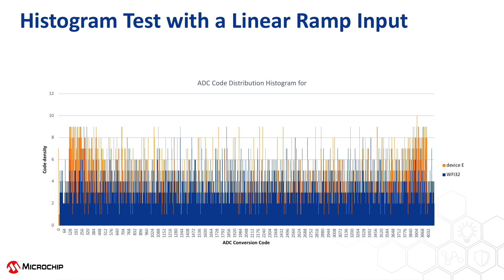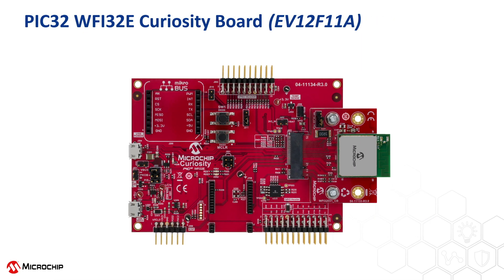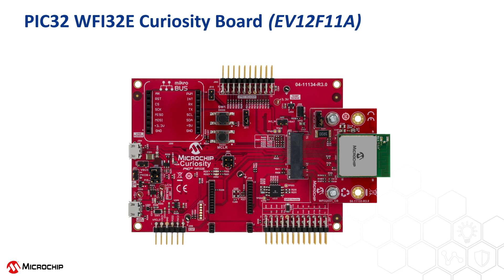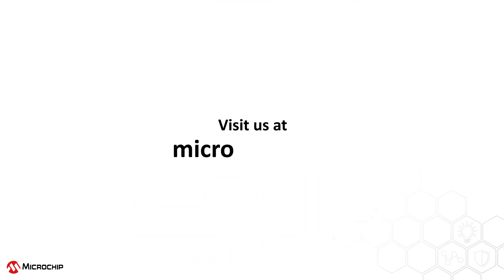This means that the ADC of the competing device generates different output codes for a given input voltage when sampled at different points of time. In comparison, the WFI32 ADC has a very small variance in this situation. This video used easily accessible benchtop equipment to make a quick comparison of the ADC performance. Stay tuned for Part 2 of this video, where we perform this comparison using professional lab equipment. For more information about WFI32, please visit the Microchip website or contact your local sales representative.